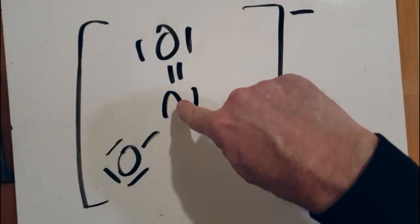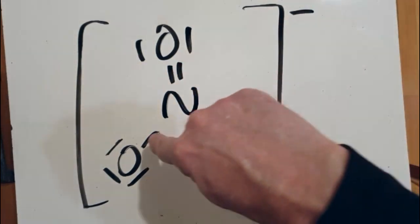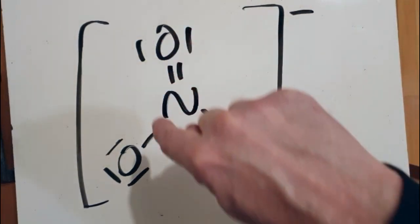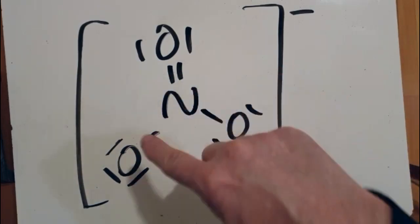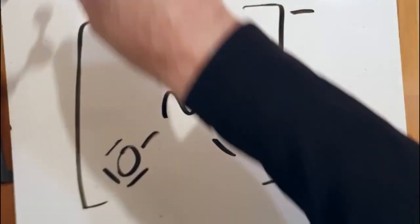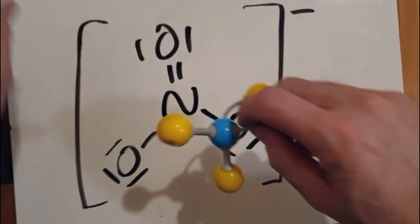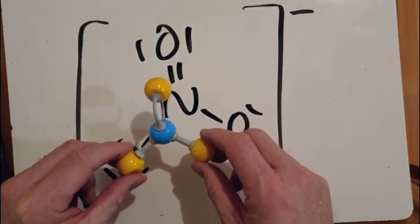So the central atom has three electron domains. Double bond is an electron domain, single and a single, and no lone pairs, so that means it's going to be trigonal planar.